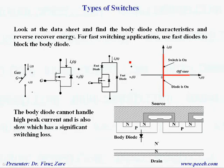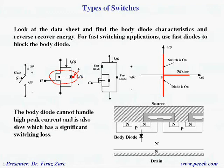When we design a power electronic circuit based on MOSFET, we have to look at the datasheet. If there is any body diode, we have to consider it, because body diodes are not very fast diodes. In order to block that and use MOSFET in high frequency applications, we need to have fast diodes in this configuration. This fast diode can block the body diode.